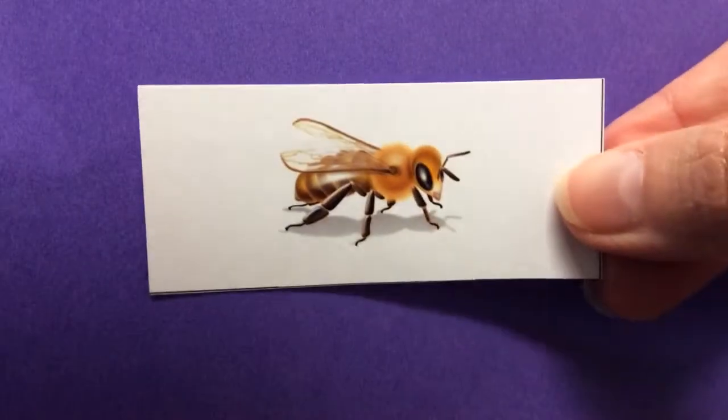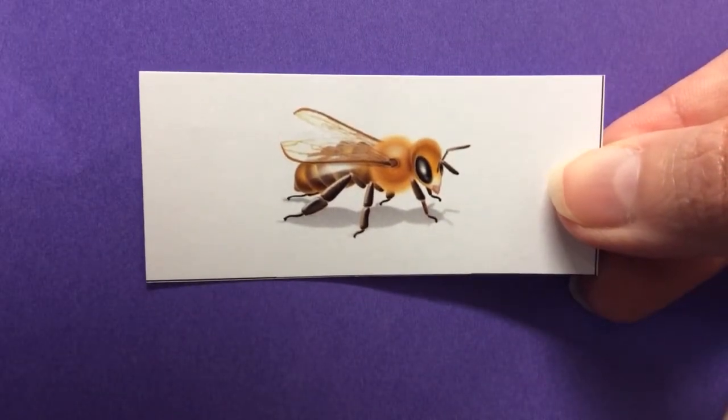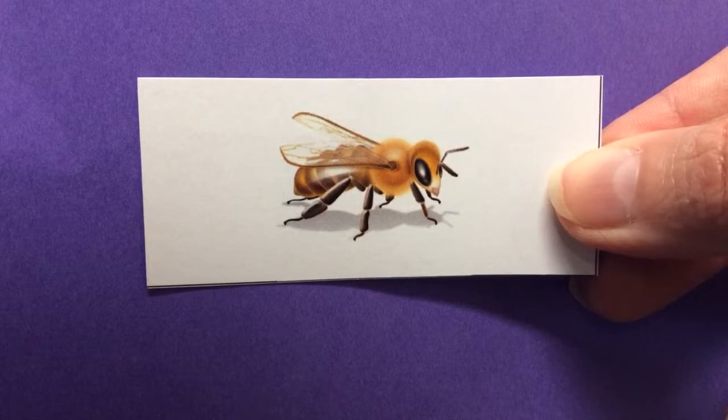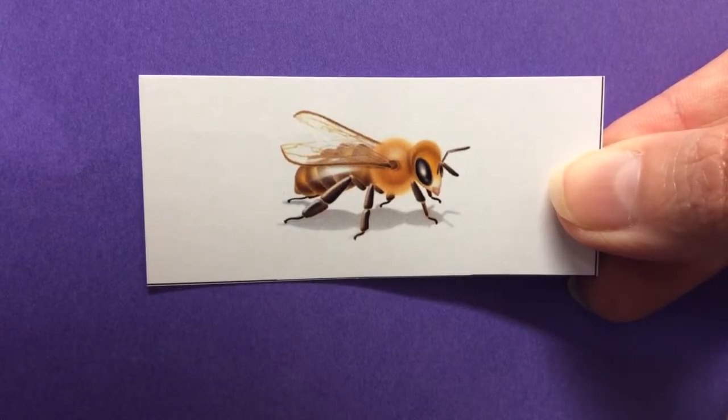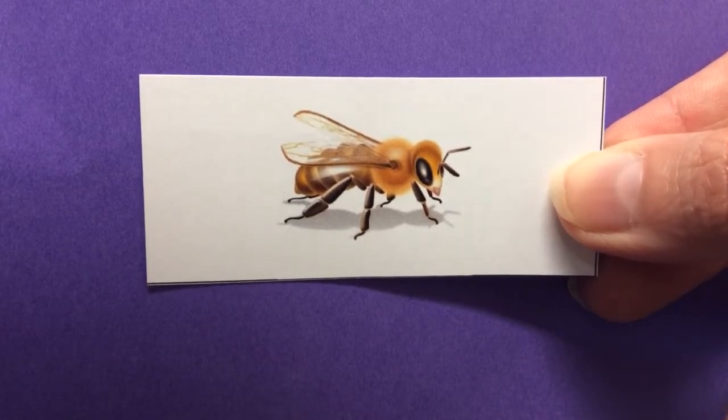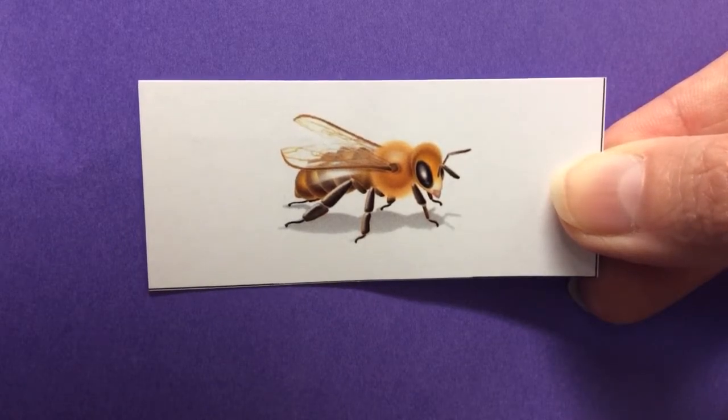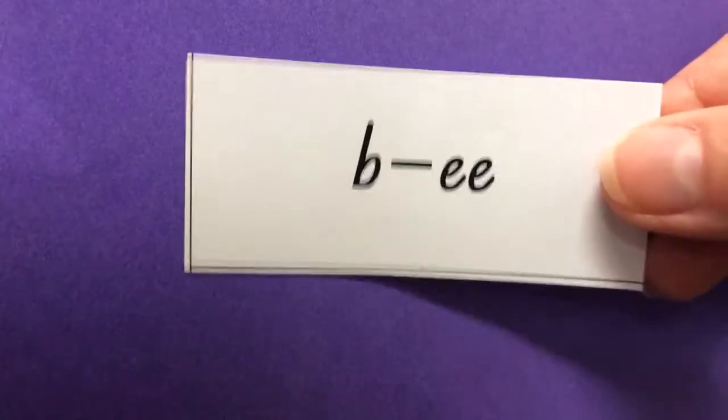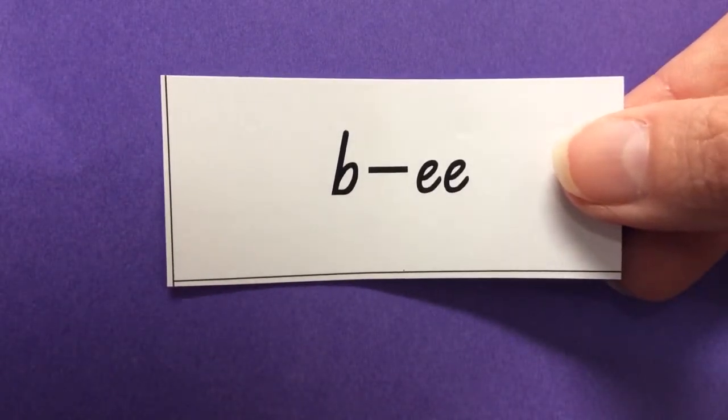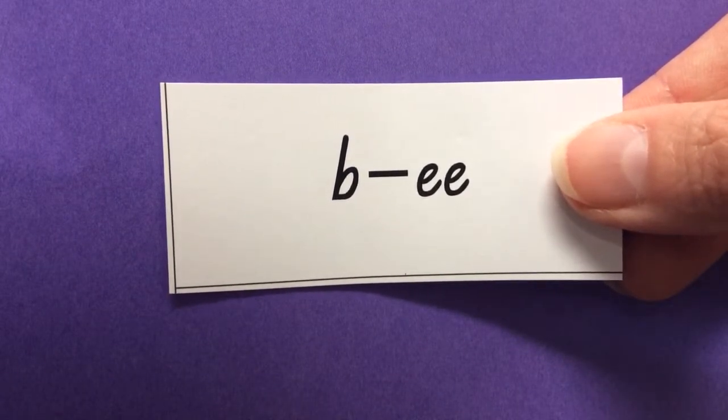Next two are a little bit easier. Only two sounds in this word. Bee. Bee. The buzzy bee gives us yummy honey. Bee. It's a quick one. Bee. There it is. Bee. B-E. It's the long E sound.